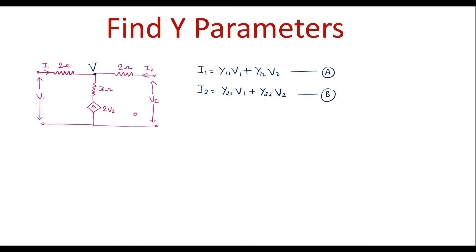The Y parameters for the given circuit can be calculated in two ways. In the first way, by shorting V2, we will get the first two parameters, that is Y11 and Y21. Then by shorting V1, we will get the other two parameters, that is Y12 and Y22. In another method, I can do the comparison method, and I will prefer doing the comparison method.